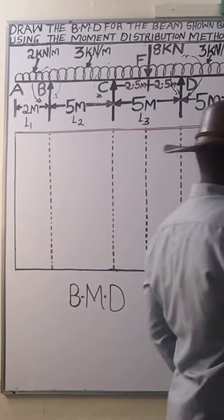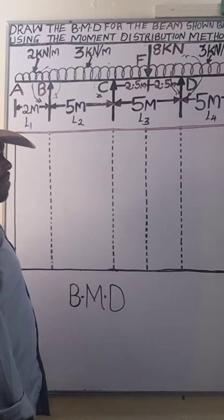So we now have all the moments we need to plot the bending moment diagram and we are going to begin with the bending moments due to vertical loads.